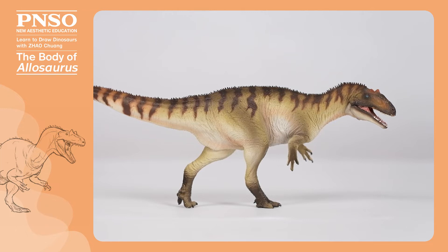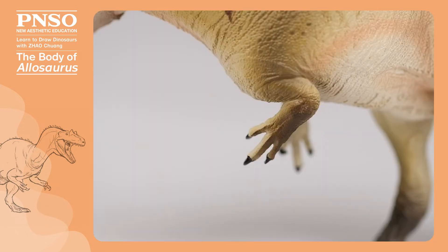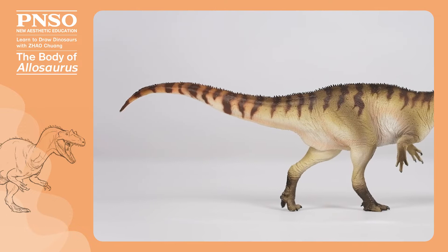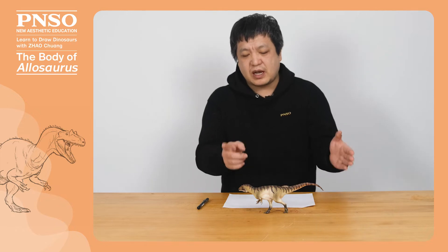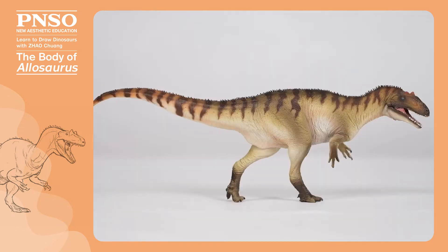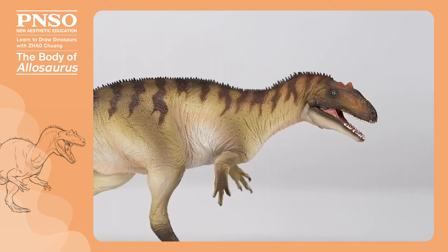It had relatively short front hands with three fingers, relatively long hind legs and a long tail. When we draw it, we should pay attention to the proportions of the various parts of its body. For example, its tail accounted for half of its body length, and its back to tail was level with the ground. The length of its head was basically the same as that of its neck. Its head was as wide as the pelvis, and the length of the head was about the same as that of the forelimbs. Pay attention to these proportions when drawing.